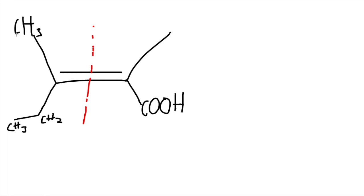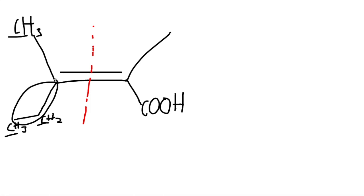First, we compare this carbon to this carbon — carbon and carbon are the same, so we move back one. On the left side there is nothing to move back to; it only has one carbon. But going back on the right side we see there is another carbon, making it an ethyl group. Two carbons is bigger than one carbon, so we circle that side.